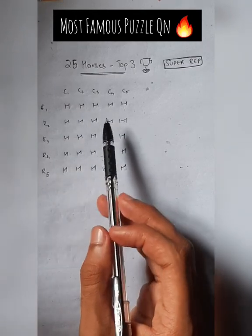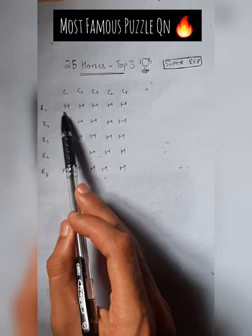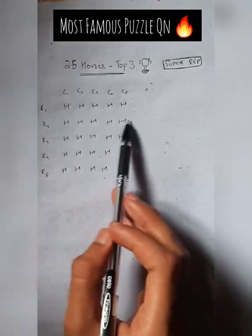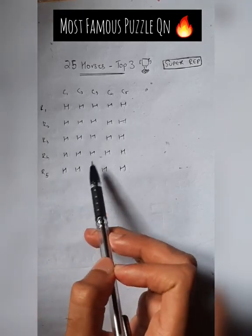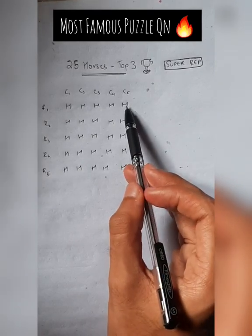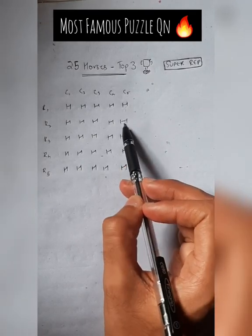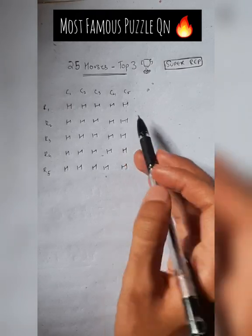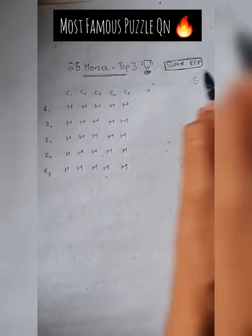What we are going to do is race them five at a time. Let's suppose the first horse in each row wins. So how many races happened total? Five races happened, and we got the top five from each row.